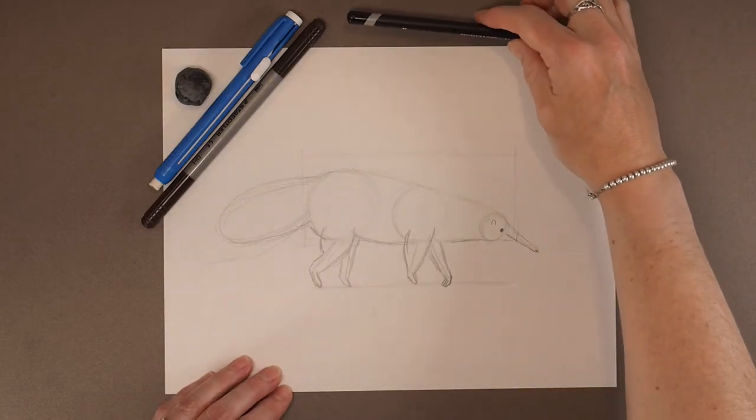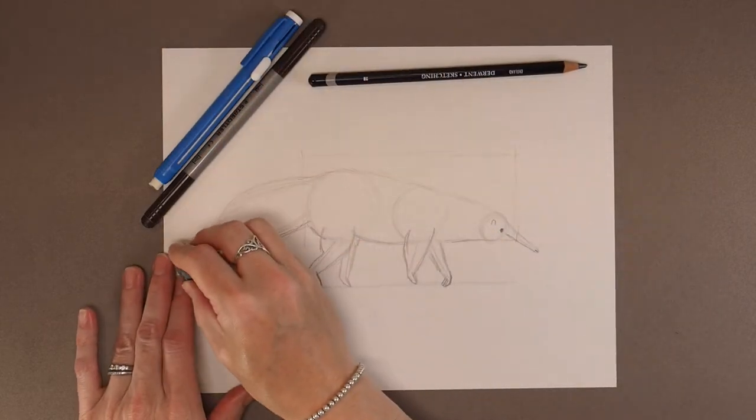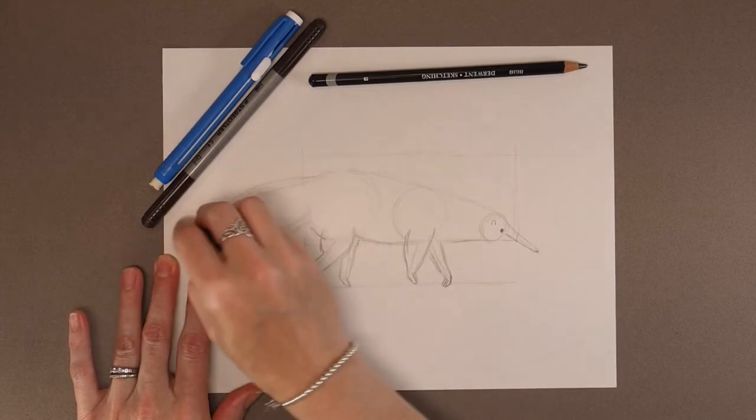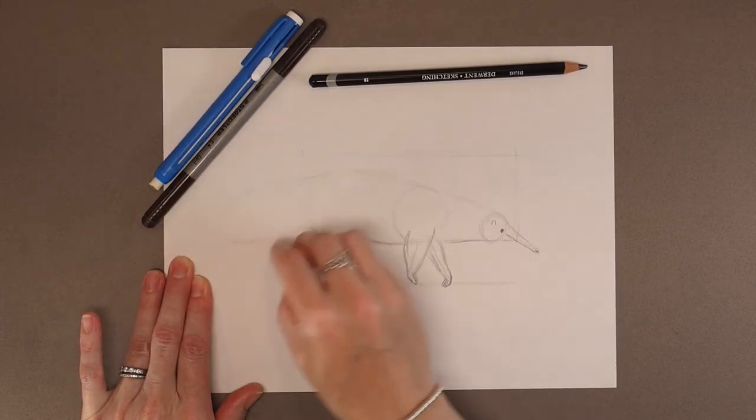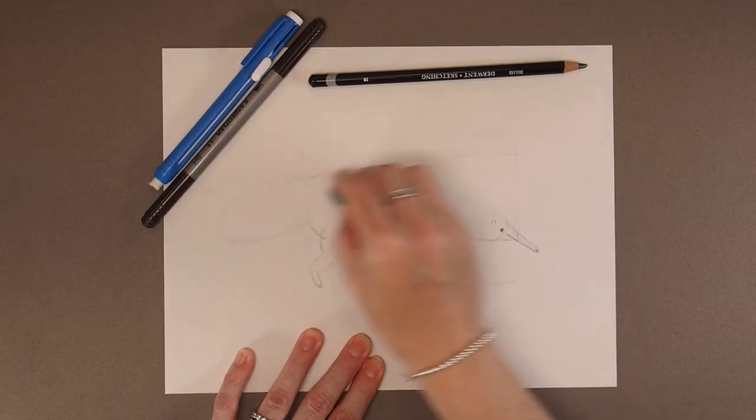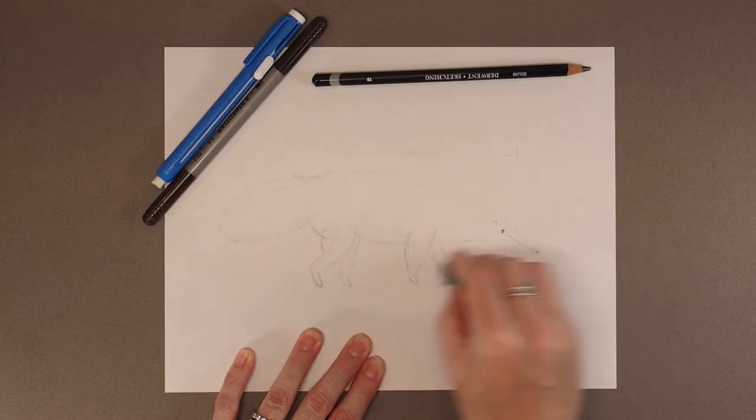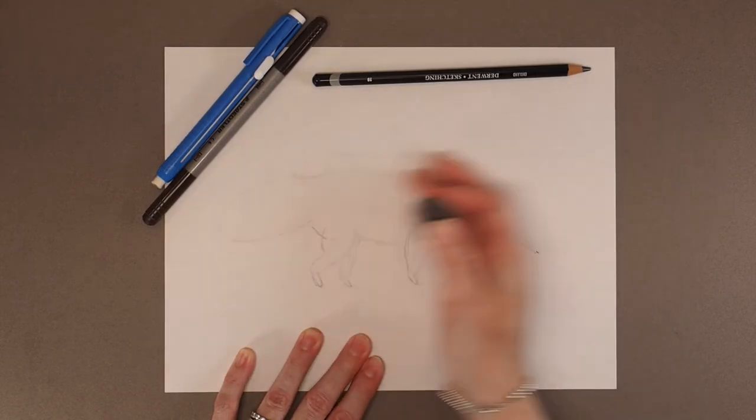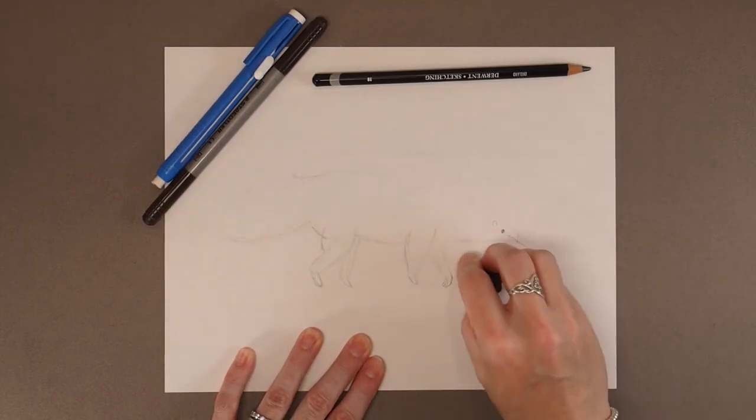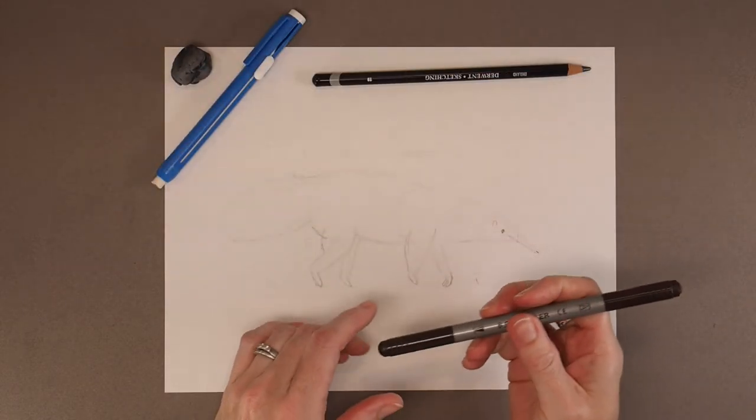I'm going to put my pencil down, grab my kneaded eraser, and just lightly move it over my drawing so that I don't have too much pencil. And now I'm ready to use a dark brown marker.